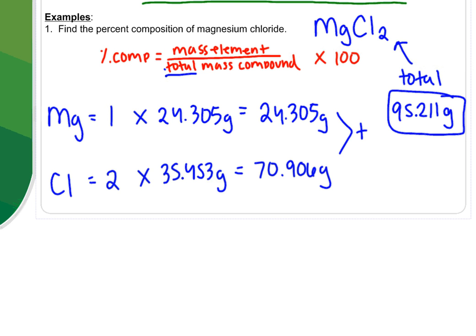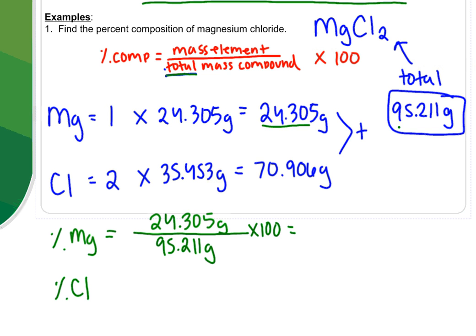To do percent composition, I actually want to figure out the percentage of magnesium and the percentage of chlorine in the compound. So this is where we apply the formula. The mass of magnesium, I figured out that was 24.305 grams divided by the total mass of the compound, which we figured out was 95.211 grams times 100. Don't forget to multiply it by 100. Your answer will not be correct if you don't do that. So what I get is a percentage of 25.5% magnesium.